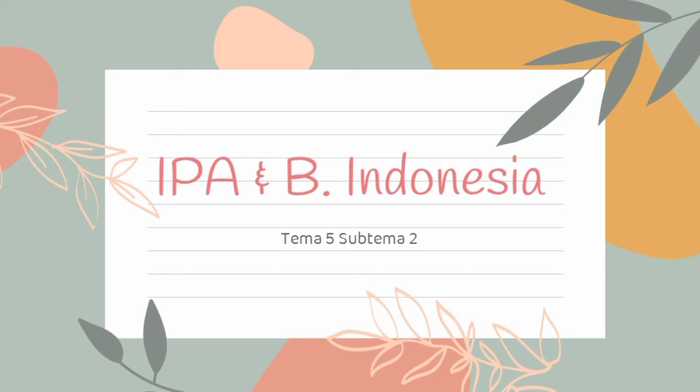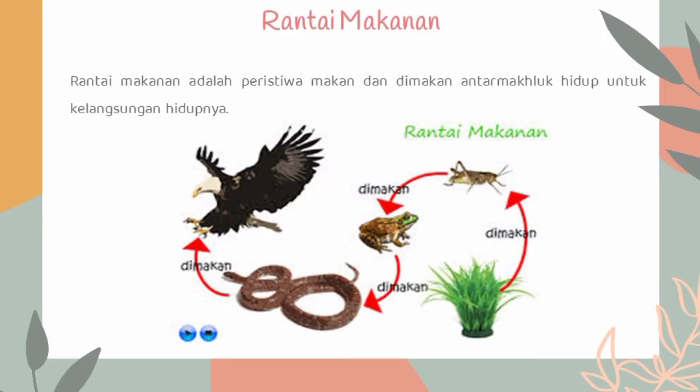Subtema 2. Mari siapkan buku tema 5 kalian dan alat tulis kalian serta simak video berikut ini. Setiap makhluk hidup membutuhkan makanan untuk bertahan hidup. Melalui makanan, makhluk hidup memperoleh energi yang digunakan untuk tumbuh, bergerak, dan melakukan aktivitas. Oleh karena itu, di alam terbentuk interaksi makan dan dimakan antar makhluk hidup yang disebut dengan rantai makanan. Rantai makanan adalah peristiwa makan dan dimakan antar makhluk hidup untuk kelangsungan hidupnya.